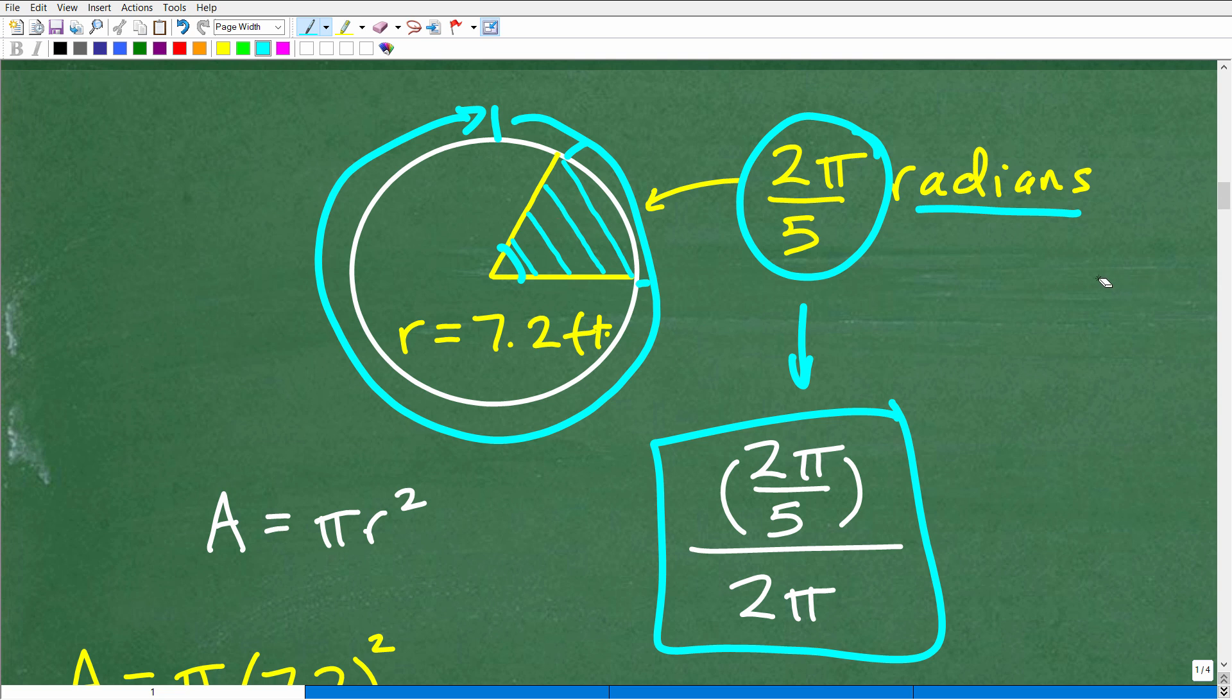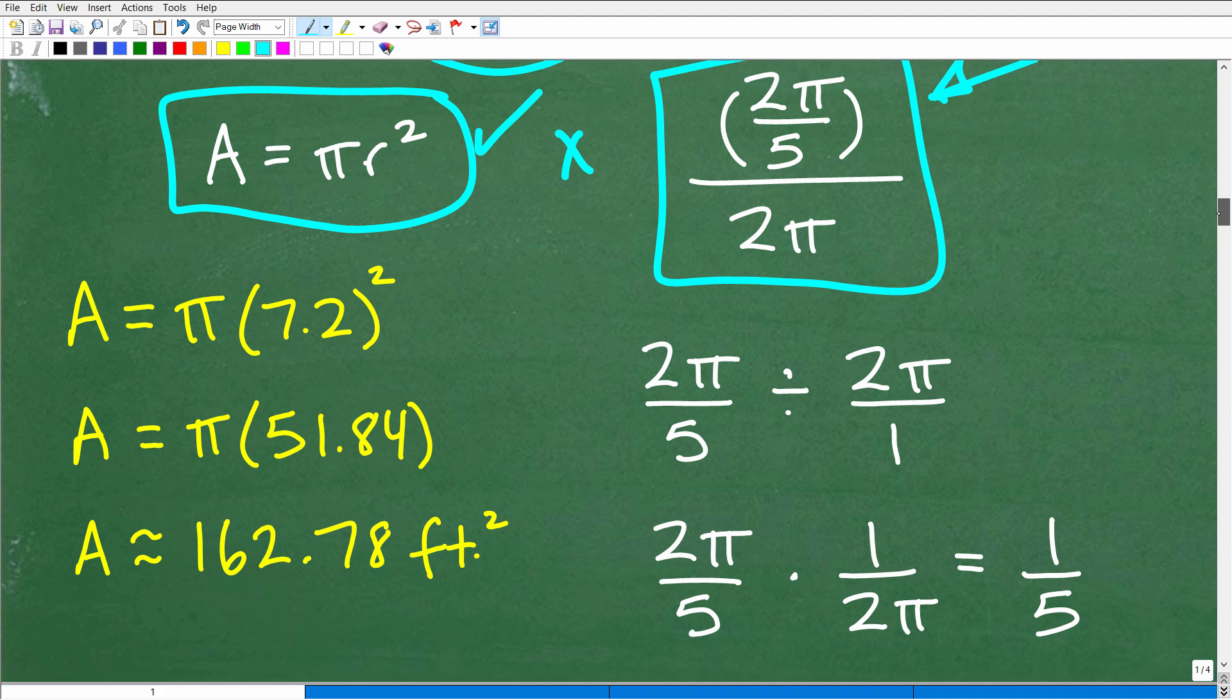This is the ratio or the part of the circle's areas that defines the area of that sector. Hopefully, I didn't fumble on my words too bad. But you can see how this is the same setup as the previous problem. But nevertheless, we still have to find the area of the full circle. Area equals πr². We have the radius, 7.2 feet squared. And then we're just going to multiply that area of the entire circle by this right here.